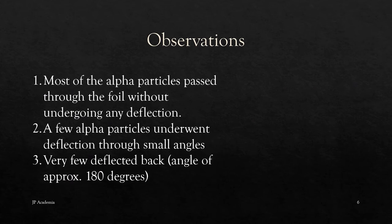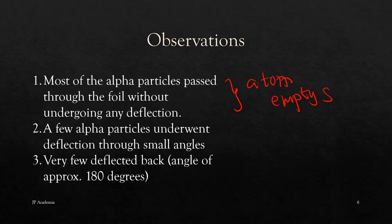We have three basic observations based on the scattering experiment of Rutherford. First, most of the alpha particles pass through the foil without undergoing any deflection. We can interpret this as the atom being mostly empty space. Second, a few alpha particles underwent deflection through small angles, and this shows that the nucleus is positively charged as the alpha particles interact with it.